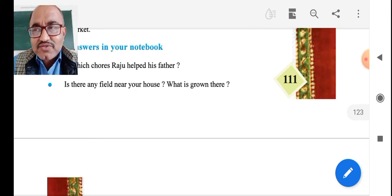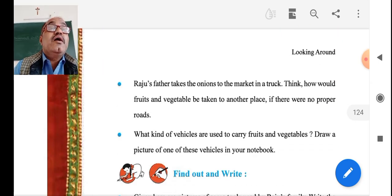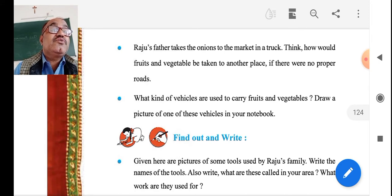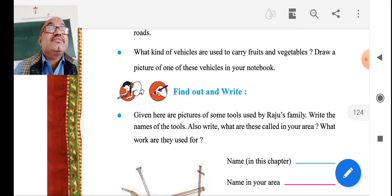Friends, it is a homework question. It is only observation. Write down in a rough notebook. Raju's father takes the onions into the market, into the truck, and he is taking to the Agriculture Produce Market Committee. There he can sell.